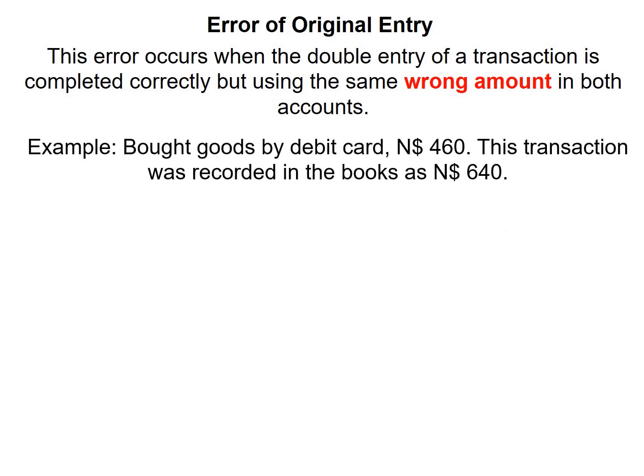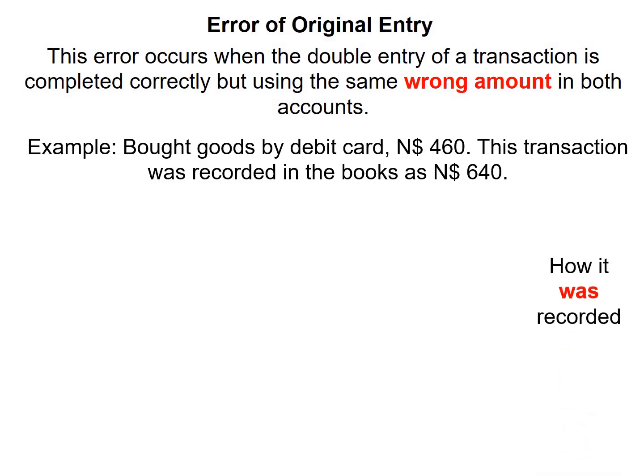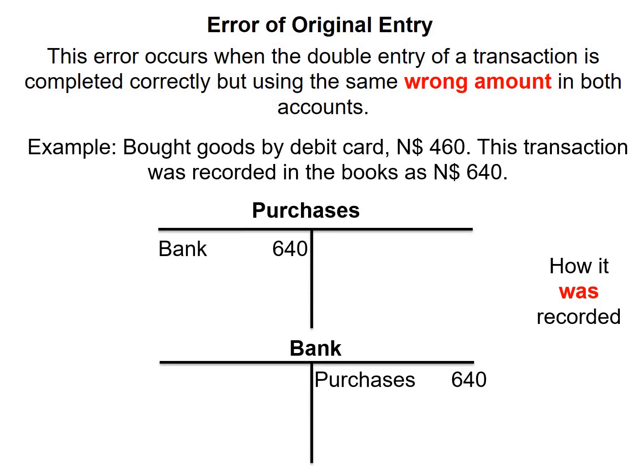Goods were bought by debit card for $460. However, this transaction was recorded in the books as $640. So you can see the two amounts are different. Purchases was debited with $640 and bank was credited with $640, not with $460. We need to rectify this, so we will correct this error in the general journal.